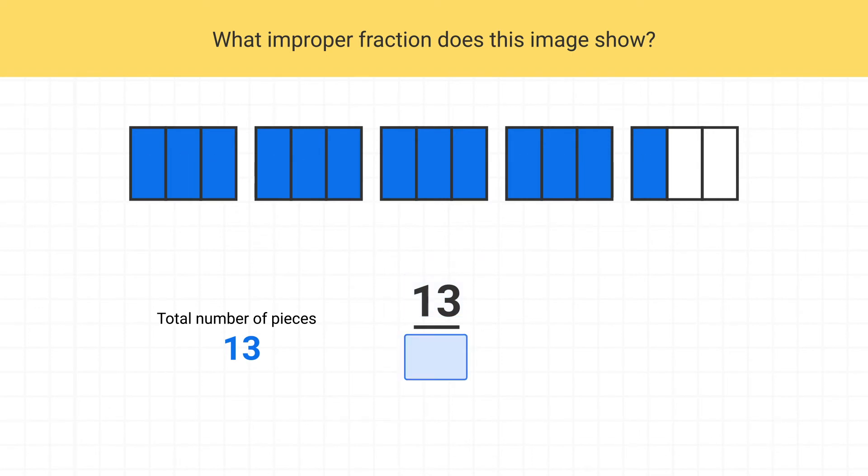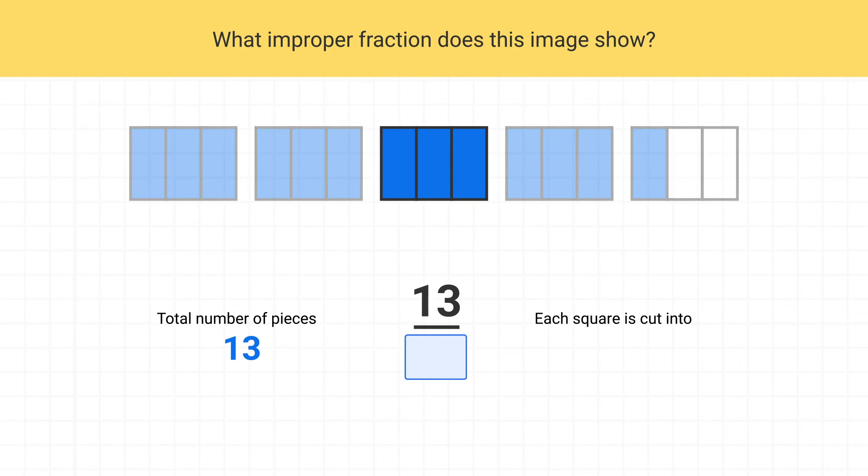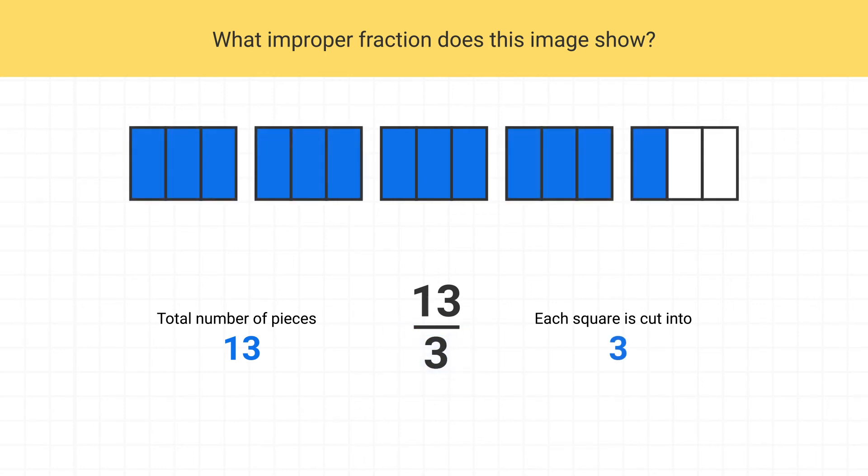Then, our denominator is going to be how many parts are in one whole. How many parts does it take to make just one square? We can see that one square is made up of 1, 2, 3 parts. So our denominator is 3. We can use the improper fraction 13 thirds to describe this image.